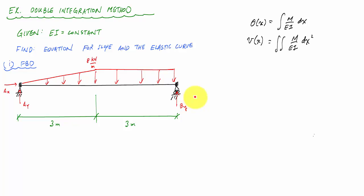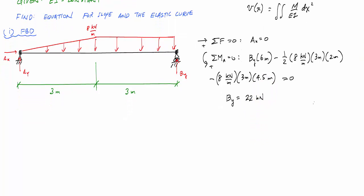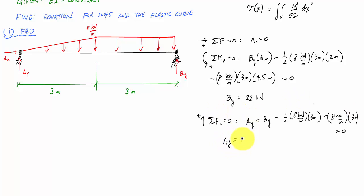I'm going to apply the equilibrium equations to determine these reactions. From sum of forces in the horizontal, Ax equals zero. Then taking moments about A, I get By equal to 22 kilonewtons. Summing forces in the vertical direction gives Ay equal to 14 kilonewtons pointing upwards.